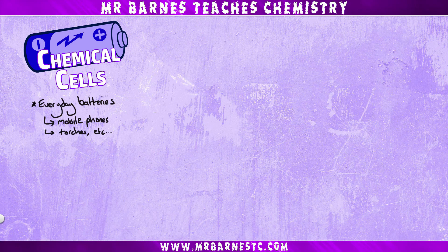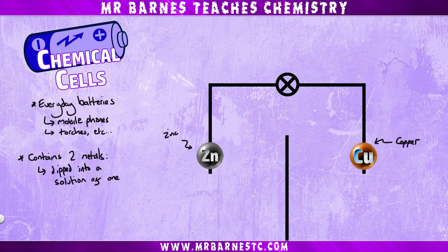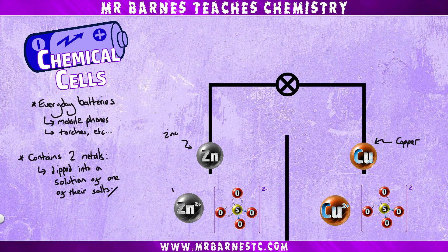A chemical cell must contain two things. It must contain two metals — for example zinc and copper — and they must be dipped into a solution of one of their salts. So for example, zinc dipped into zinc sulfate and copper dipped into copper sulfate.